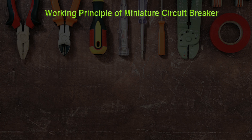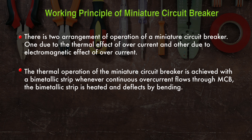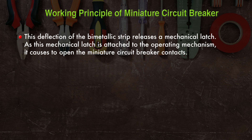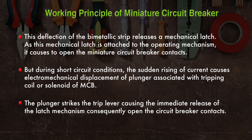The working principle of MCB involves two arrangements: thermal effect of overcurrent and electromagnetic effect of overcurrent. For thermal operation, a bimetallic strip is heated by continuous overcurrent and deflects by bending, releasing a mechanical latch attached to the operating mechanism, causing the MCB contacts to open. During short circuit conditions, the sudden rise of current causes electromechanical displacement of the plunger associated with the tripping coil or solenoid, which strikes the trip lever causing immediate release of the latch mechanism and opening of the circuit breaker contacts.